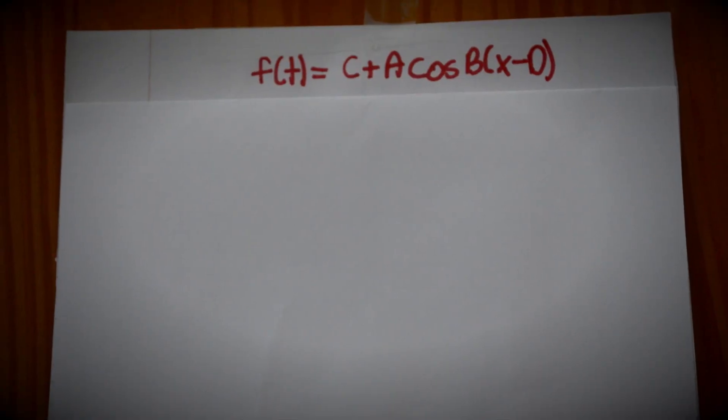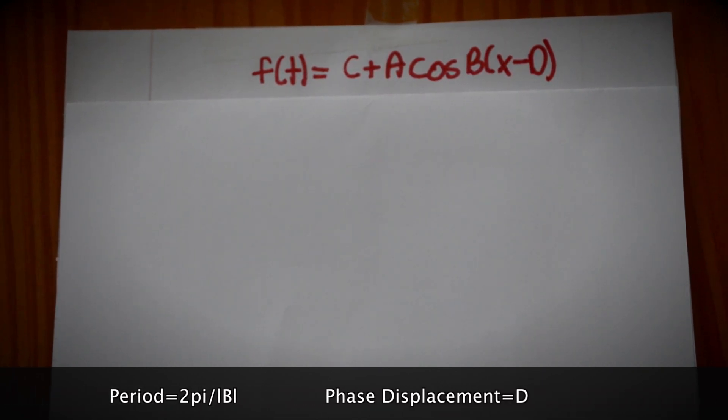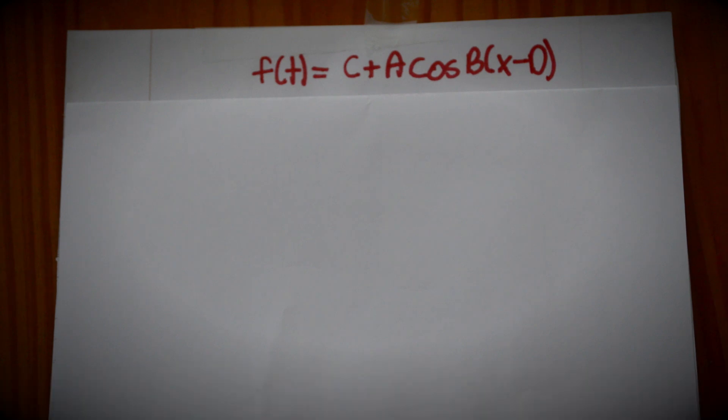So this is the equation for a sinusoidal axis problem. The sinusoidal axis is along line y equals c, the amplitude equals the absolute value of a, the period equals 2π over the absolute value of b, and the phase displacement equals d. This gives us the equation f(t) equals c plus a cosine b times the quantity of x minus d.